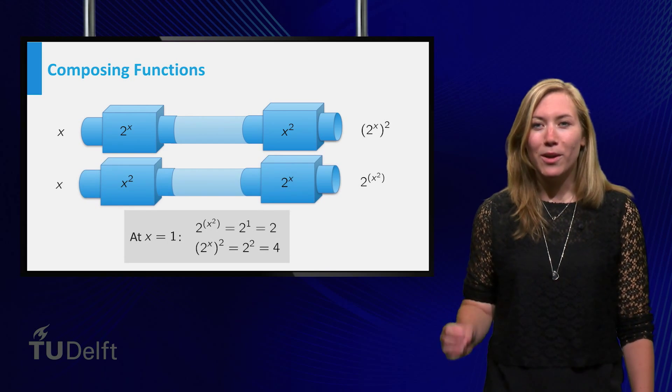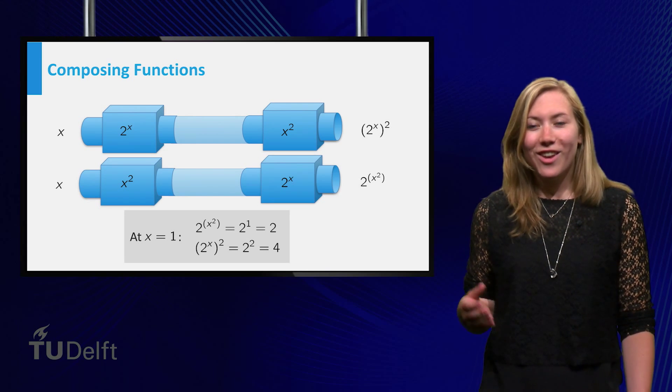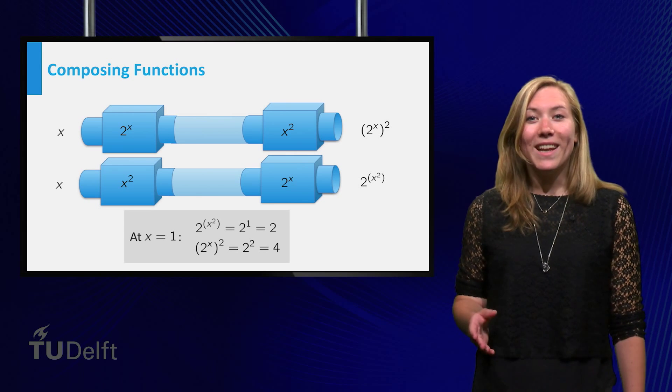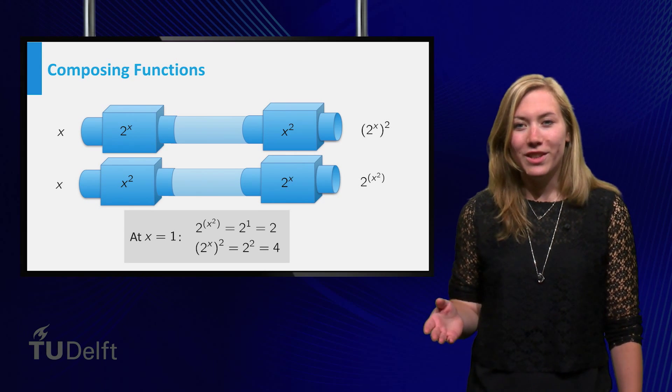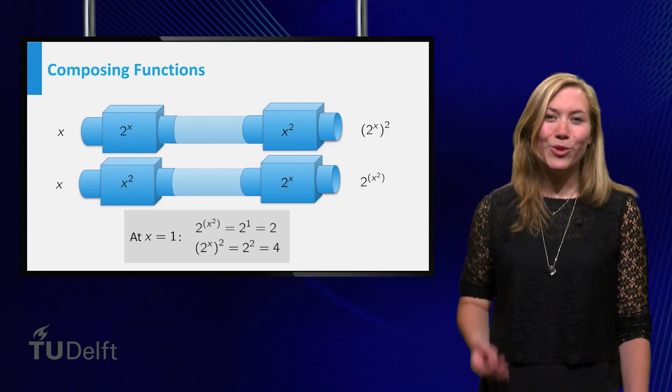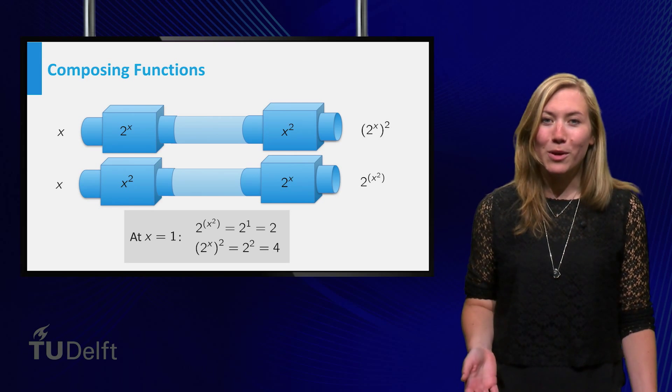2 to the power x squared is unequal to 2 to the power x squared. Recognizing that a function is a composition can be helpful, as then you might use a substitution to turn a complicated problem into a simpler one.